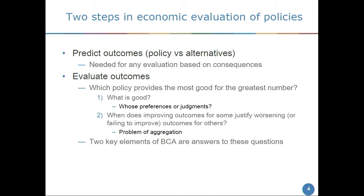There are two fundamental steps in economic evaluation of policy. The first is just predicting what the consequences of the outcomes will be — essential to any procedure based on evaluating consequences. The second, where BCA really comes into play, is evaluating the outcomes. Economic evaluation broadly comes out of a utilitarian calculus idea, tending to focus on doing the most good for the largest number of people. That raises two critical questions: what is good, how is it measured, and who gets to judge?